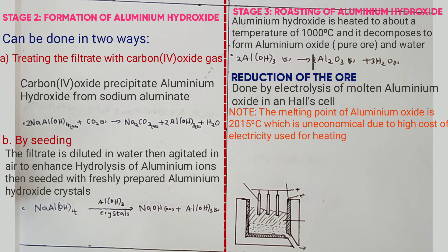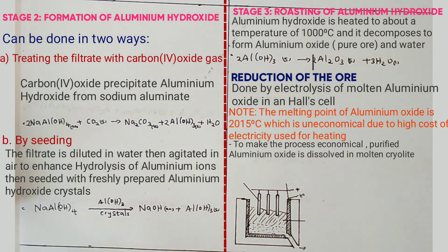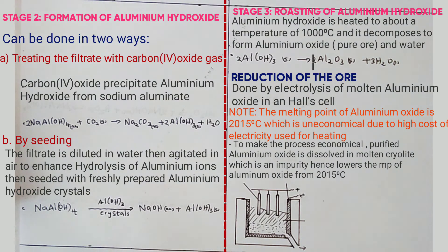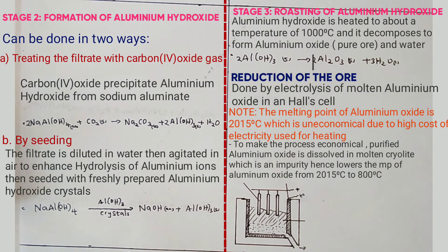To solve this problem: purified aluminium oxide is dissolved in molten cryolite. The reason is that cryolite is a eutectic mixture, hence it lowers the melting point of aluminium oxide from 2015 to 800 degrees Celsius. The significance is to make the process economical because it saves on electricity used for heating. Note that electrolysis cannot be carried out below 800°C because aluminium oxide will solidify, hence ions will not be free to conduct electricity.